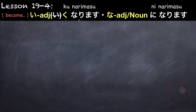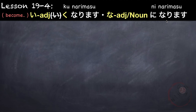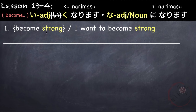Next is the word narimasu, which means become or to become. It is attached after an i-adjective, na-adjective, or a noun. For i-adjectives, you remove i and replace it with ku: i-adjective ku followed by narimasu, meaning to become i-adjective. For na-adjectives or nouns, we don't change anything, but we put ni after, followed by narimasu. For example, become strong — strong in Japanese is tsuyoi. Remove i and replace with ku: tsuyoku, followed by narimasu. Tsuyoku narimasu means become strong.